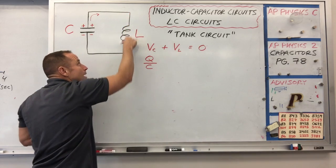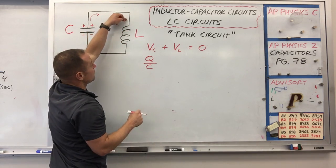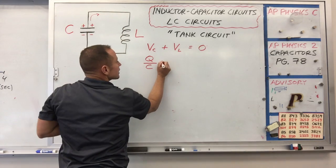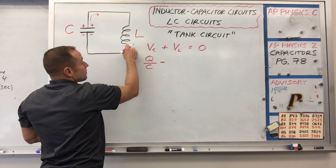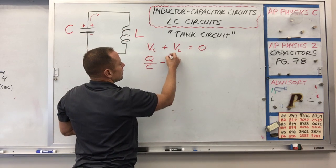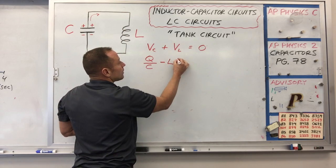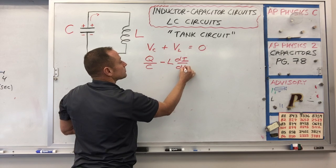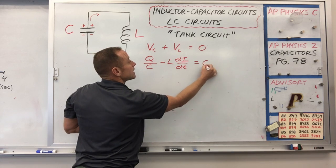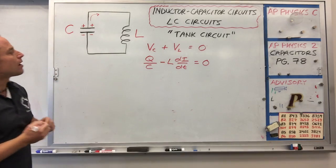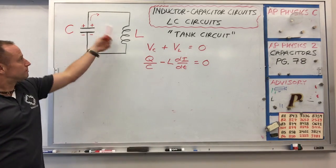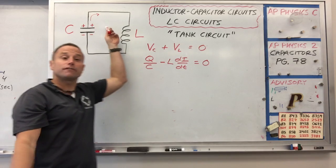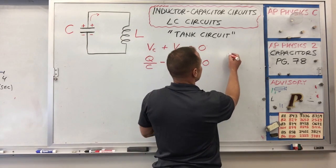As you go across the inductor, this is going to be dropping voltage because this is the high voltage side and the low voltage side. Current's going to go from high to low, so you're going to drop in voltage by L dI/dt. Those voltage changes add to zero. Our goal here is to get the dynamics of the circuit — the charge on the capacitor as a function of time, or the current as a function of time.